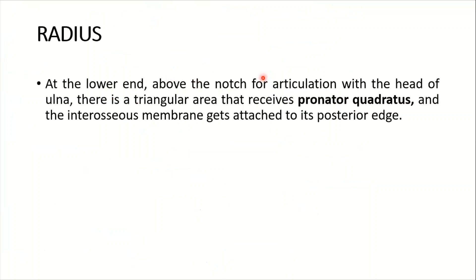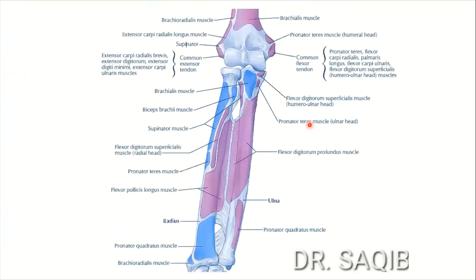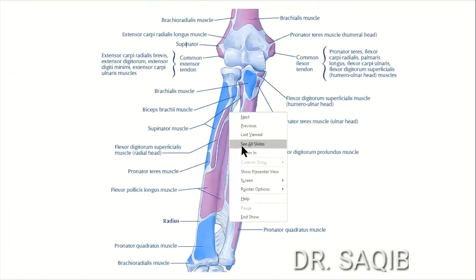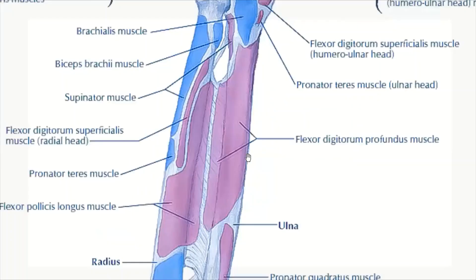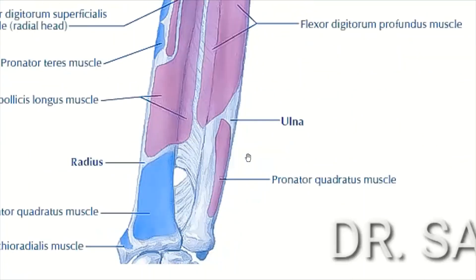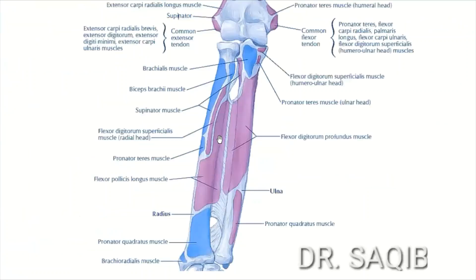At the lower end, above the notch for articulation with the head of the ulna, there is a triangular area that receives the pronator quadratus, and the interosseous membrane gets attached to its posterior edge. Here you can see the pronator quadratus at the lower end.